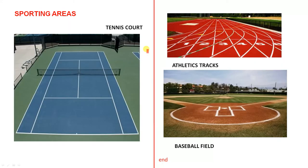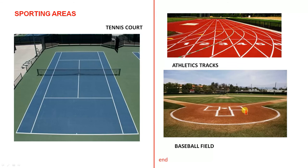In sporting areas, if you look at the tennis court, see all these beautiful straight lines. The athletics track — you've got straight lines and you've also got curved lines around the bend. And the baseball field also has many examples of curved lines and straight lines.